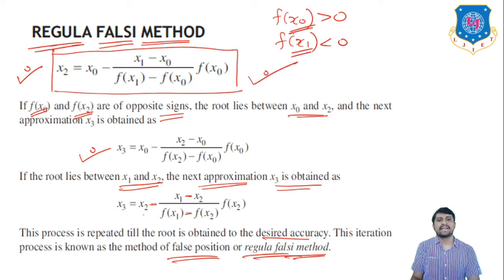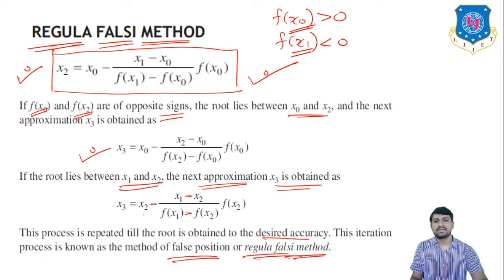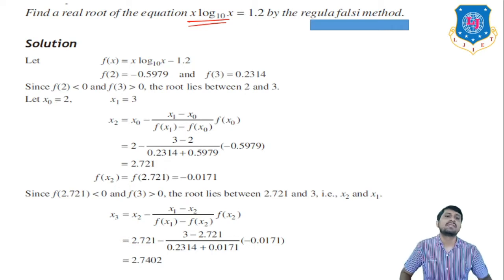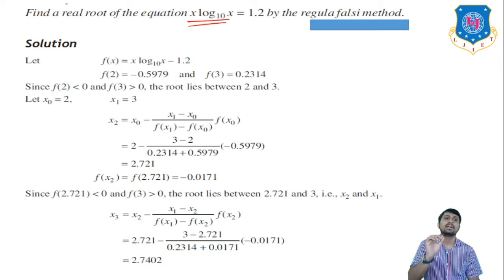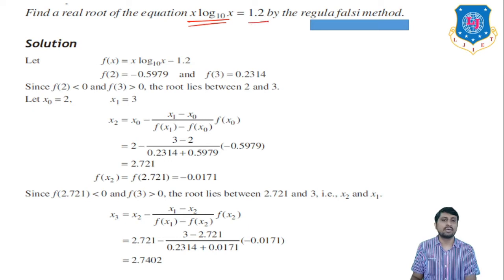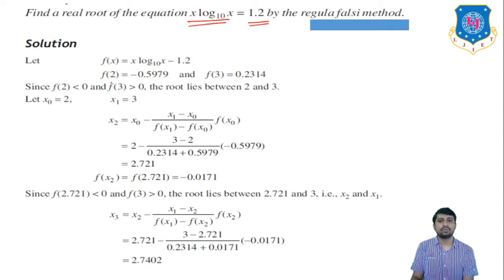If the root lies between x0 and x1, meaning f(x0) > 0 and f(x1) < 0, then you find x2 using this method. Let's solve an example: find the real root of the equation x · log x (base 10) = 1.2 by the Regula Falsi method. In your calculator, use 'log' for base 10 and 'ln' for base e. So f(x) = x · log x (base 10) − 1.2.